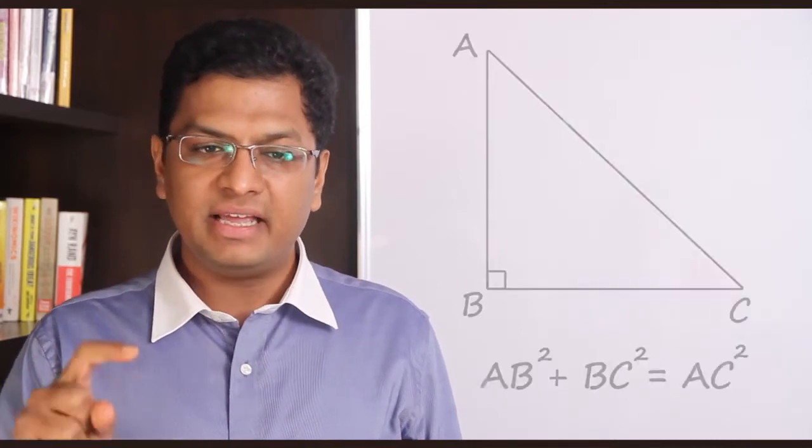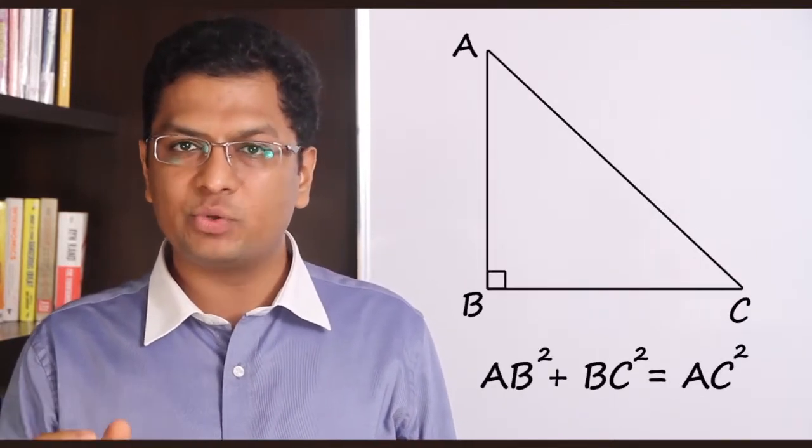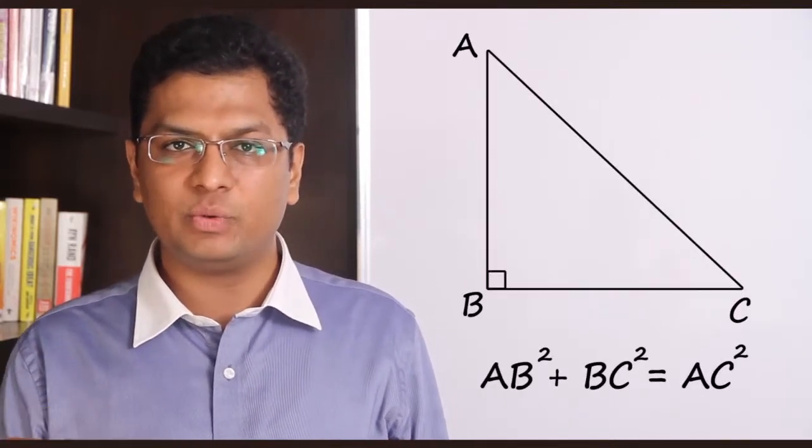In a right-angle triangle, the Pythagoras theorem states that the square of the hypotenuse — the largest side — equals the sum of the squares of the other two sides. So AC² = AB² + BC².